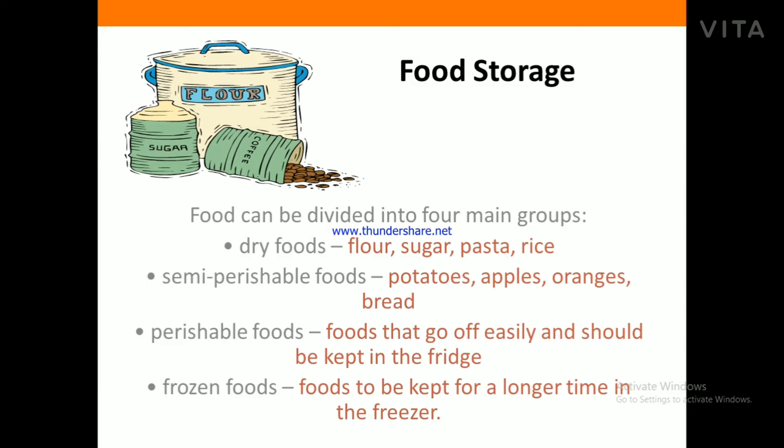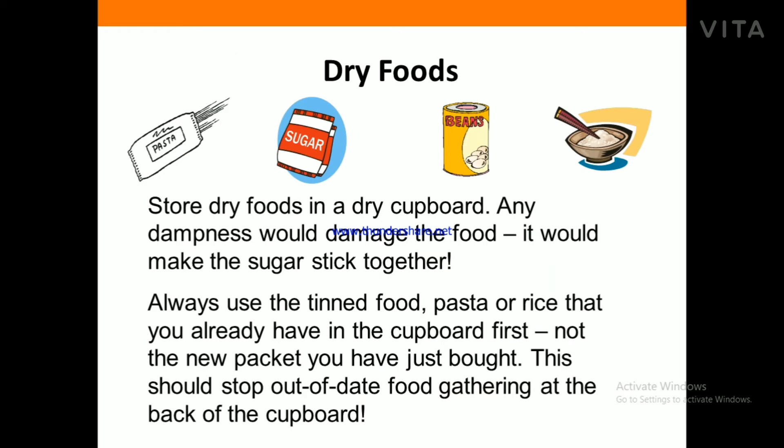Perishable foods are foods that go off easily and should be kept in the fridge — examples include cooked food, meat, etc. Frozen food is food to be kept for a long time in the freezer — examples include ice creams, all frozen items, raw meat, etc.